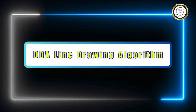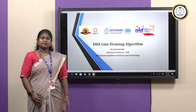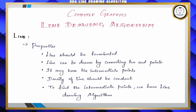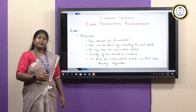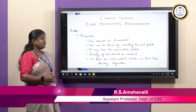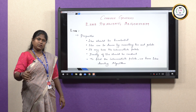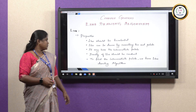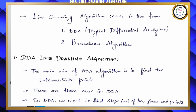Before getting into line drawing algorithms, let us get clarified with certain properties of lines. A line should terminate at a certain point — it should have a starting point and an end point. It may or may not have intermediate points, and the density of the line should be constant at all levels. To find the intermediate points, we need line drawing algorithms.